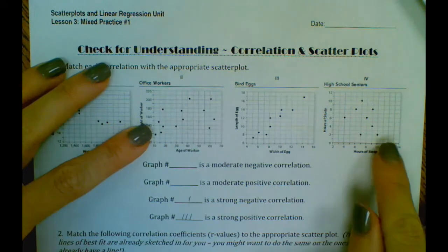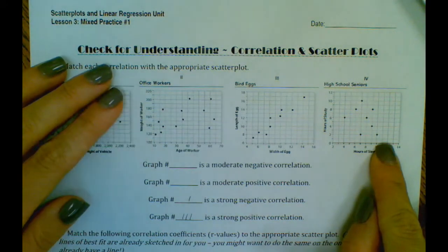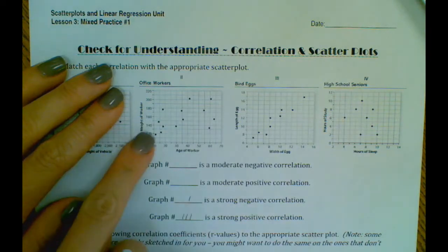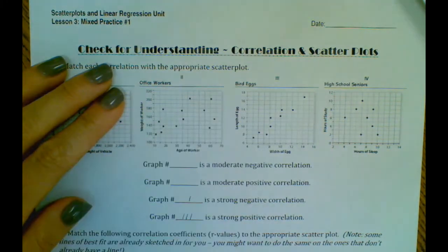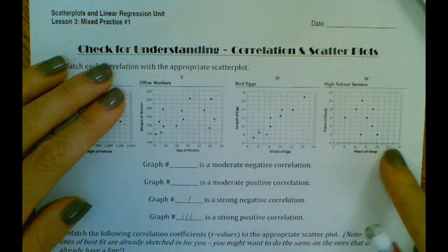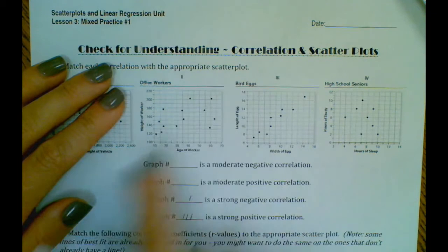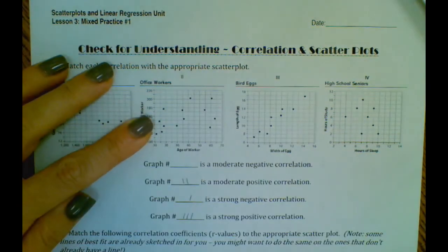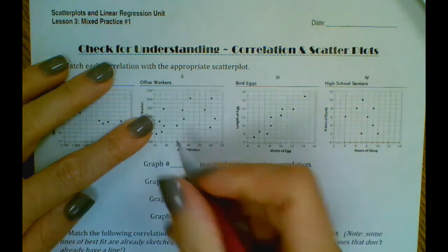Okay, and then here are weaker graphs. This one I would say is probably more of a positive trend, and this one's probably more of a negative trend. So our positive moderate would be two, and then our moderate negative would be four.